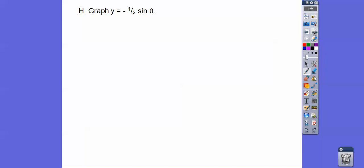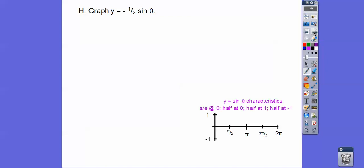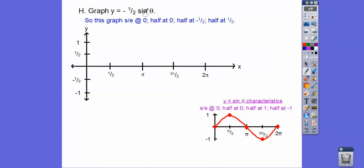Let's graph negative one-half times sine of x. Sine starts and ends at 0, halfway at 0, halfway at 1, halfway at negative 1. But we're going to multiply all of those by negative one-half. So it's still going to start and end at 0, halfway at 0. But instead of being halfway at 1, we multiply by negative one-half, so it's halfway at negative one-half. And then halfway at positive one-half.